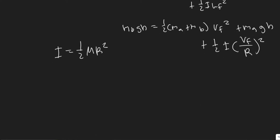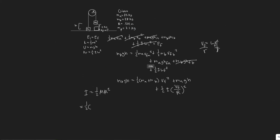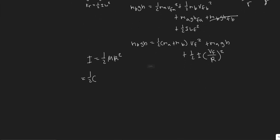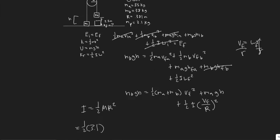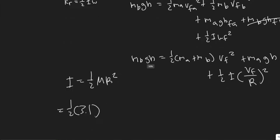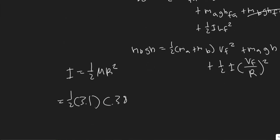Keep in mind some values were rounded, so you might get something like 1.41 m/s, but rounding gives 1.4 m/s. That is the velocity of block B right before it hits the ground.